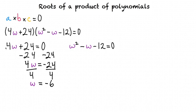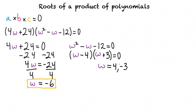This second polynomial is a quadratic equation, so we can factor it into w minus 4 times w plus 3. This will equal zero when w equals 4 or negative 3. If those steps were not familiar to you, review factoring a quadratic equation.